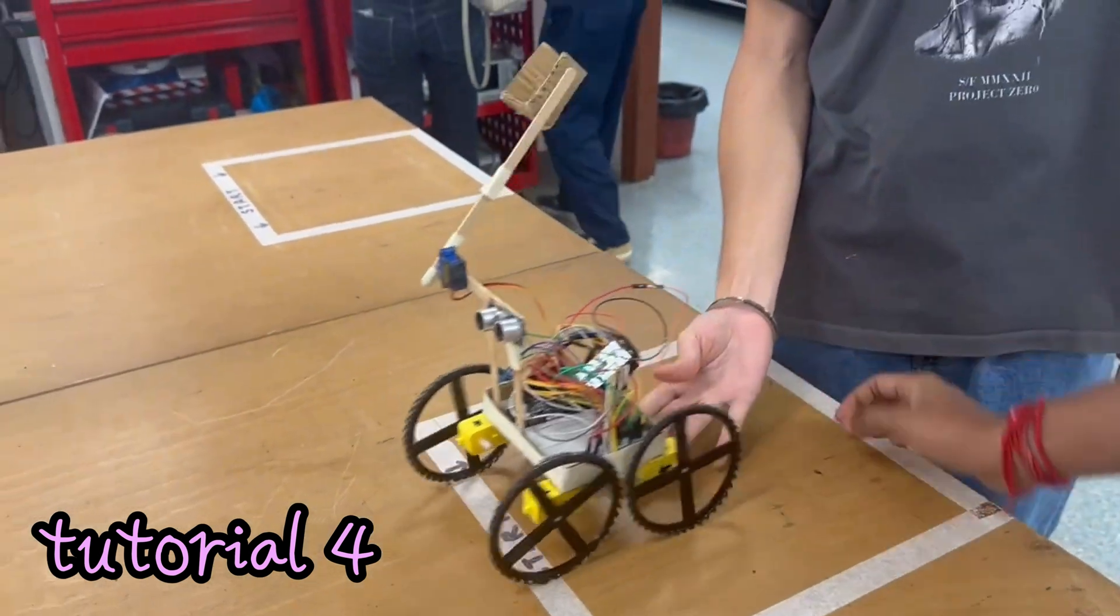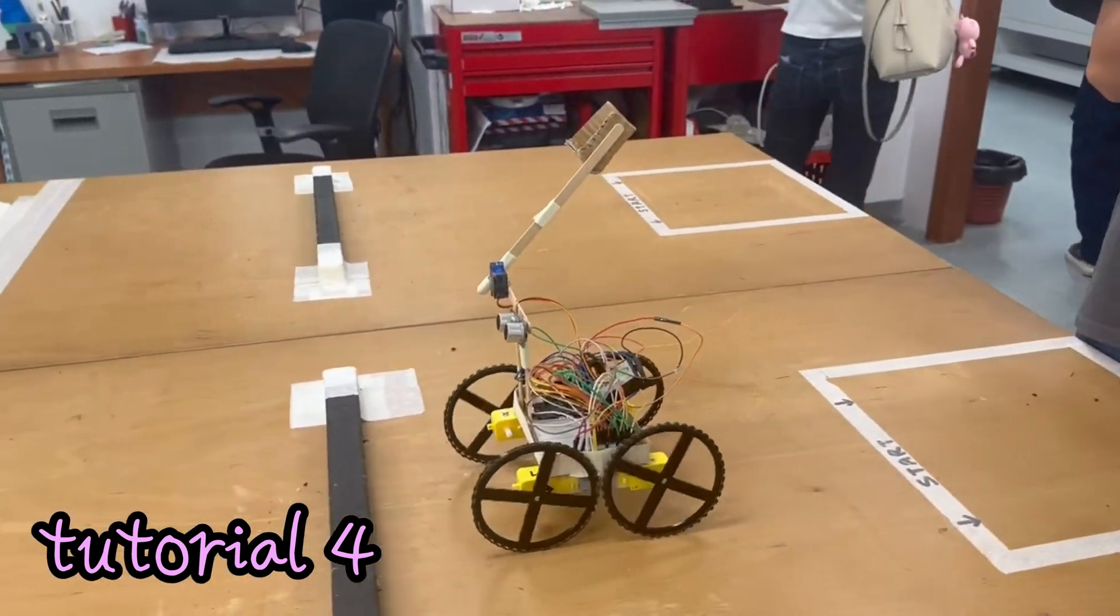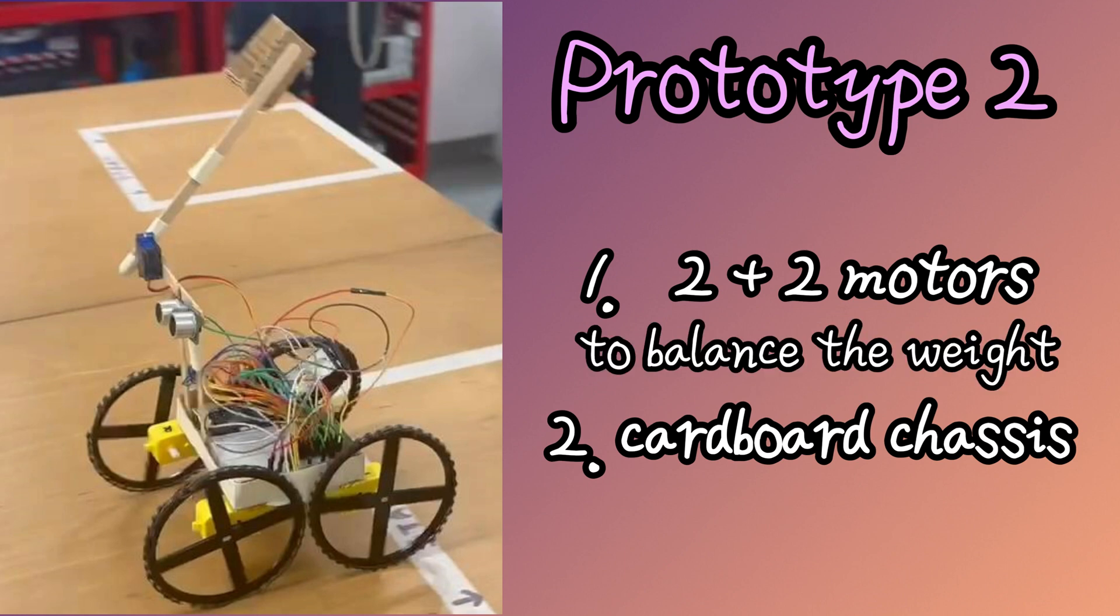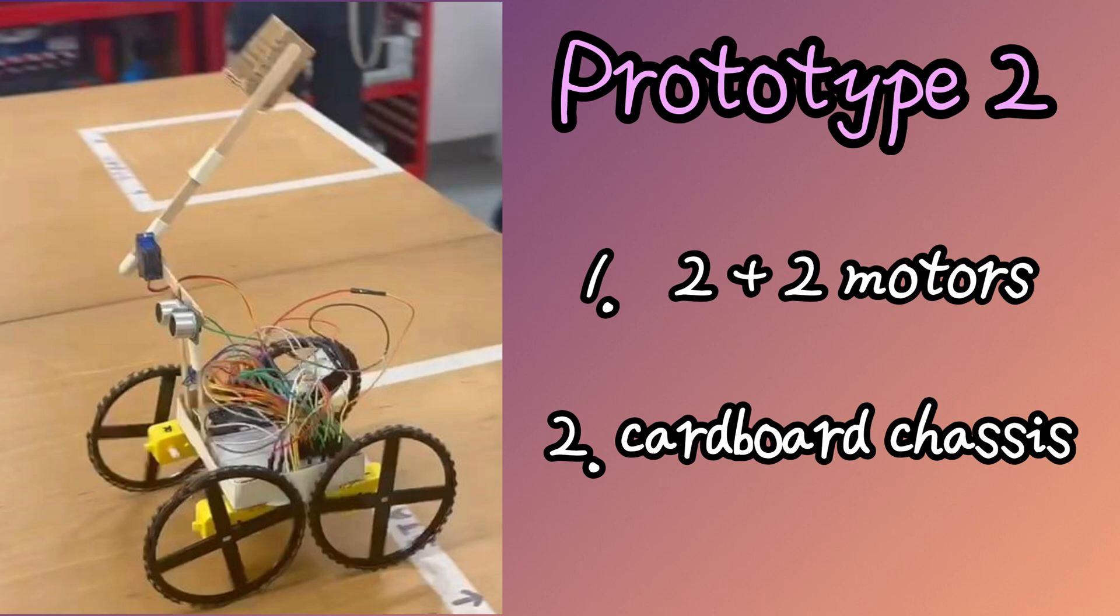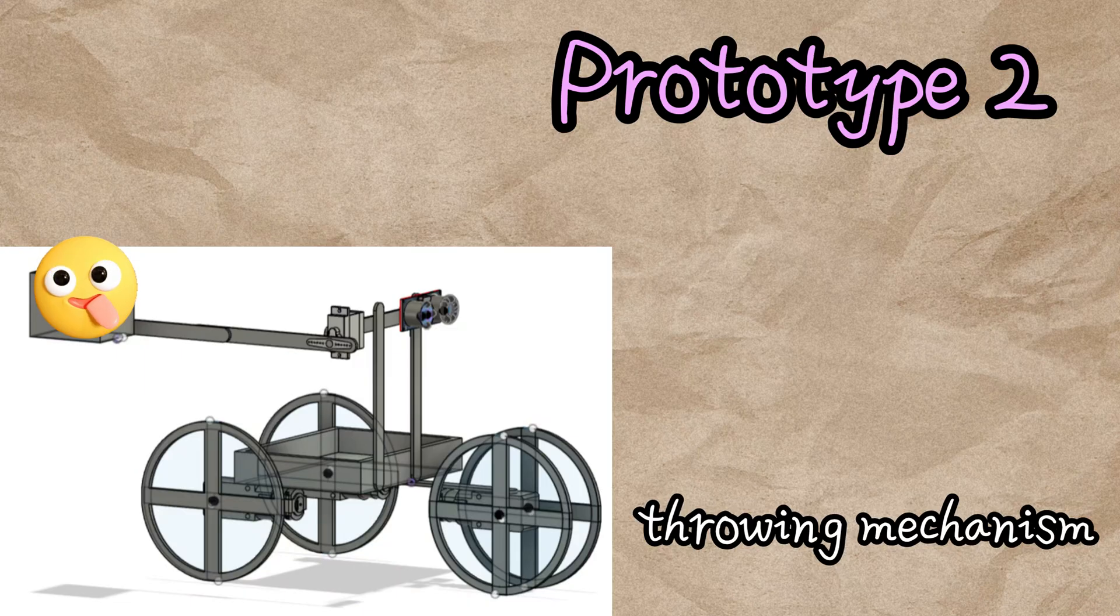Fast forward to tutorial 4, our robot looks very different as we added two more motors to balance the weight, and a cardboard chassis with dimensions just enough to fit all the components of the robot.